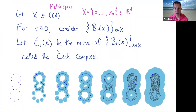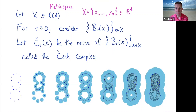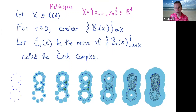On the left, we have a finite set of points in the plane, and for increasing values of R we get increasing collections of disks with increasing radius. Notice the topology changes as we go through this sequence, and we can combinatorially encode that topology by a sequence of simplicial complexes. The vertices are always the centers of the balls, the edges are given by pairs of balls that intersect, and whenever we have three balls with a mutual intersection, we put in a triangle. This gives us a filtered simplicial complex.